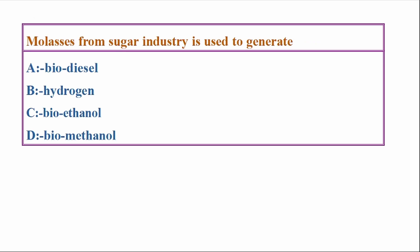Molasses from sugar industry is used to generate: Options - biodiesel, hydrogen, bioethanol, biomethanol. Answer: Option C, bioethanol.